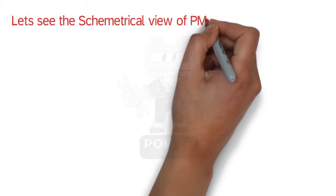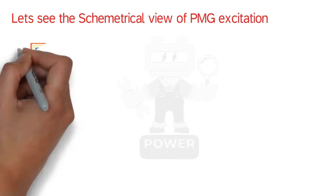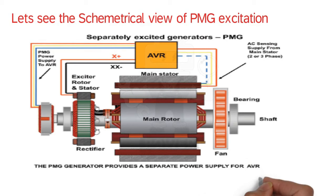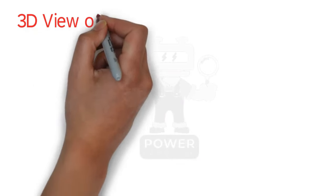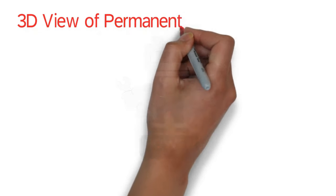Let's see the symmetrical view of PMG excitation. As seen, the whole alternator and excitation system is the same — only the addition of the PMG differentiates it from self-excitation. In the 3D view, you can see the PMG added at the rear, with three wires connecting from the PMG to the main AVR. The remaining stator and other parts are the same as the shunt system.